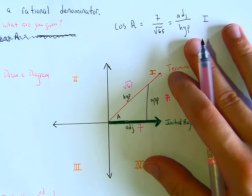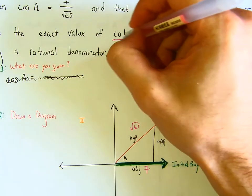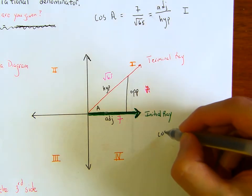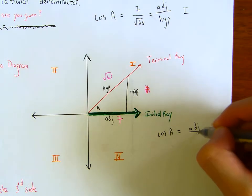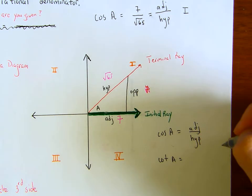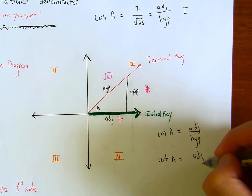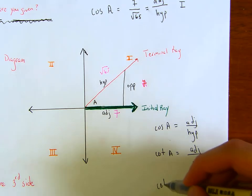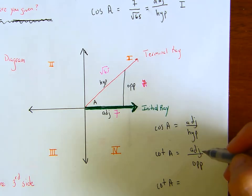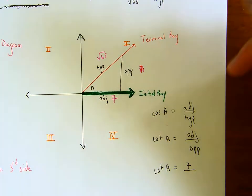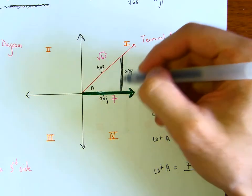Now what are you asked to find? The question is asking for cotangent of angle a. We had cosine of a equal to adjacent over hypotenuse. Cotangent of angle a is adjacent over opposite. So for the numerator of cotangent of angle a, we have 7. What we're missing is the opposite side — we don't know the length of that side.